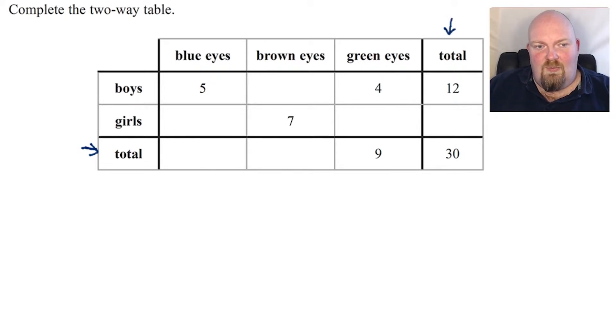If I look at this column at the end here, I can see that all together there were 30, and there were 12 boys. So in order to find out the missing value there, all I need to do is 30 subtract 12. 30 subtract 12 is 18, so I know there must have been 18 girls.